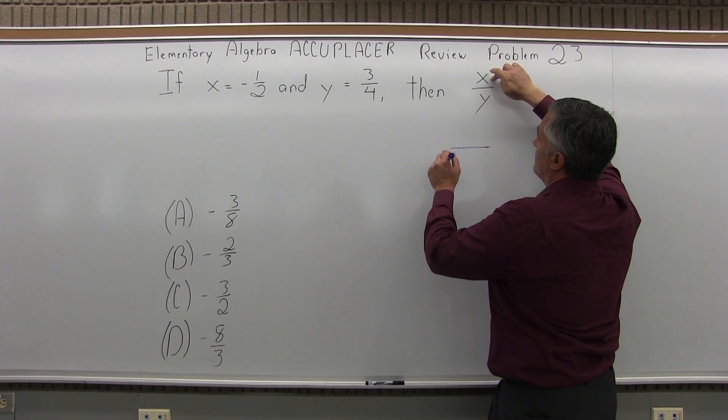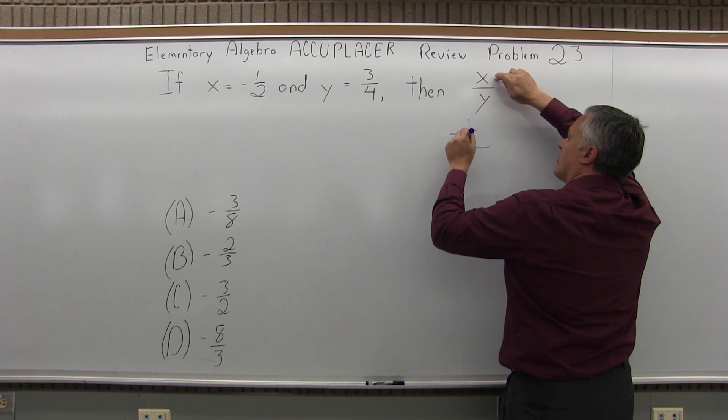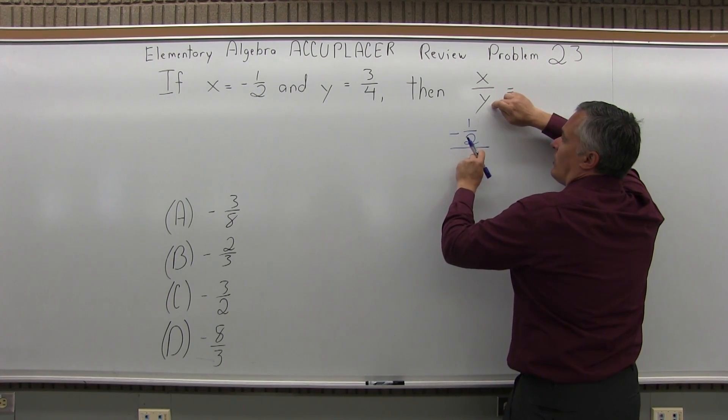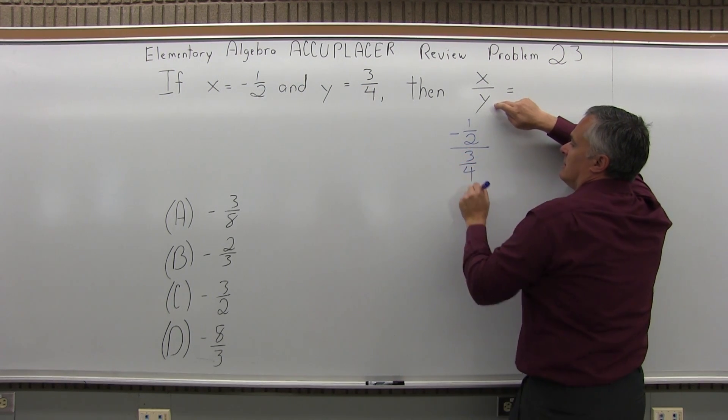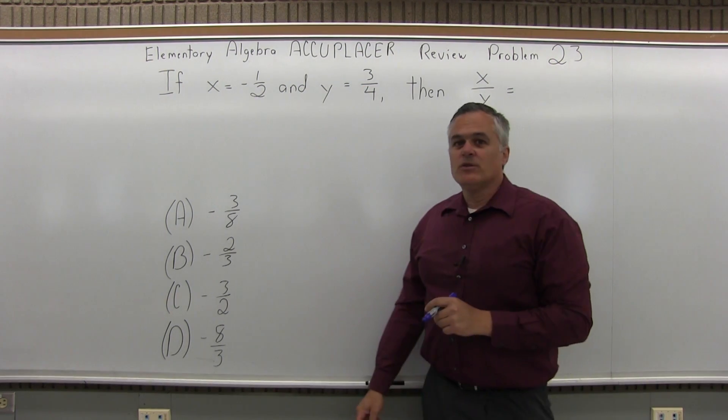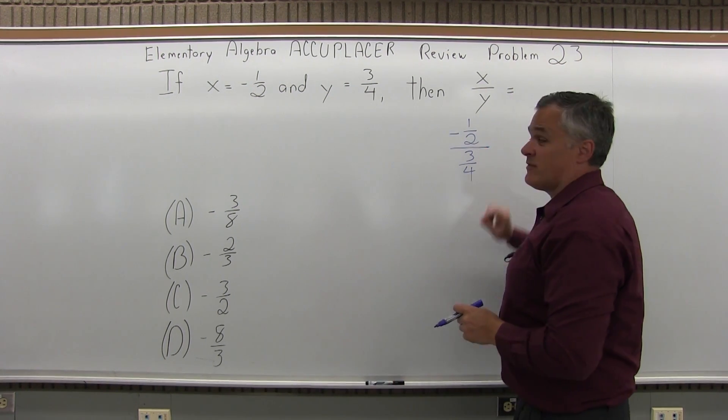So let's make a fraction. x is in the top and x is negative one-half over y, and y is positive three-fourths. So what we need to do is simplify this fraction. This is called a complex fraction. You have a fraction on the top and a fraction on the bottom.